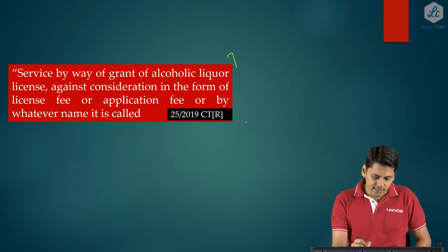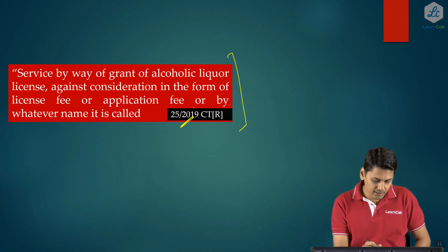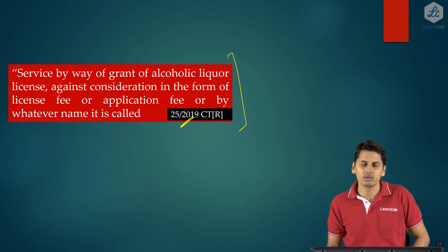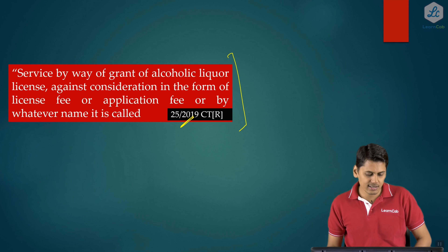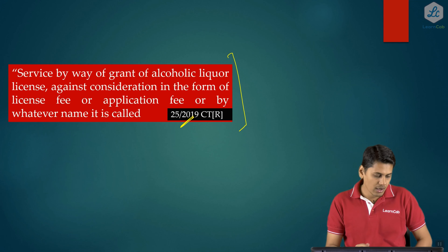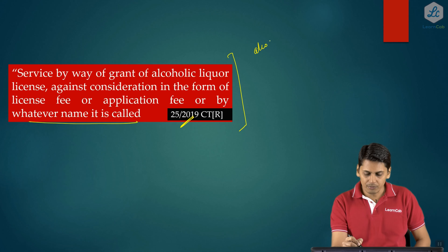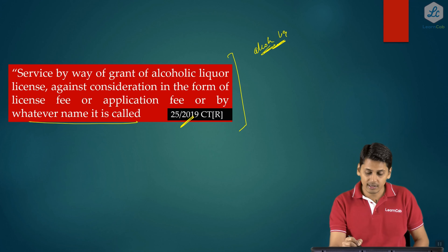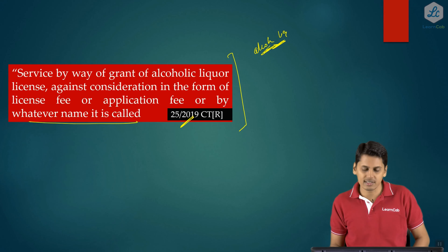The third case is the amendment notified by Notification Number 25/2019 Central Tax Rate. It reads: Service by way of Grant of Alcoholic Liquor License against consideration in the form of License Fee or Application Fee or by whatever name it is called. As we all know, Alcoholic Liquor is outside GST — any supply of liquor is outside GST and does not attract GST.